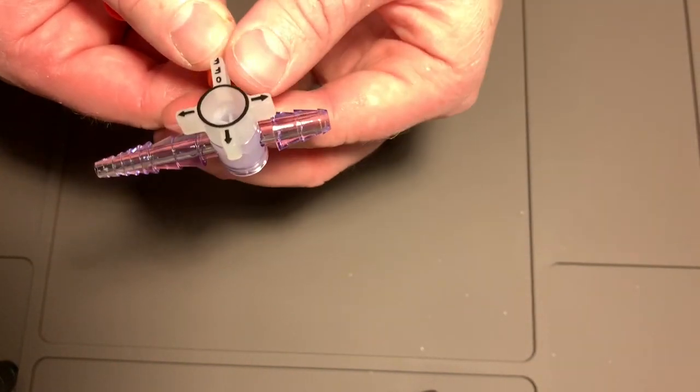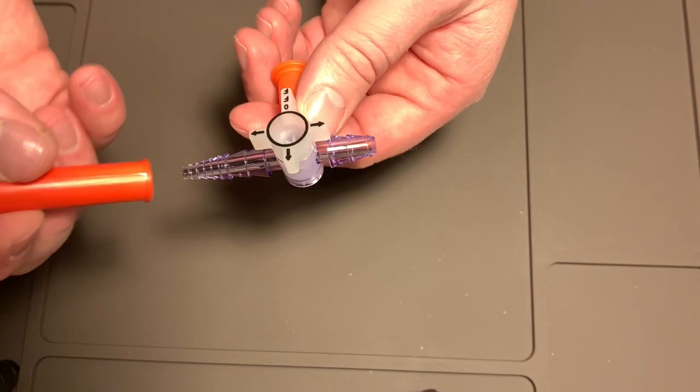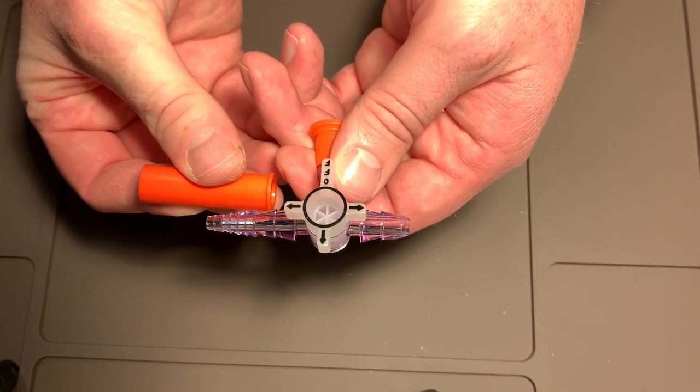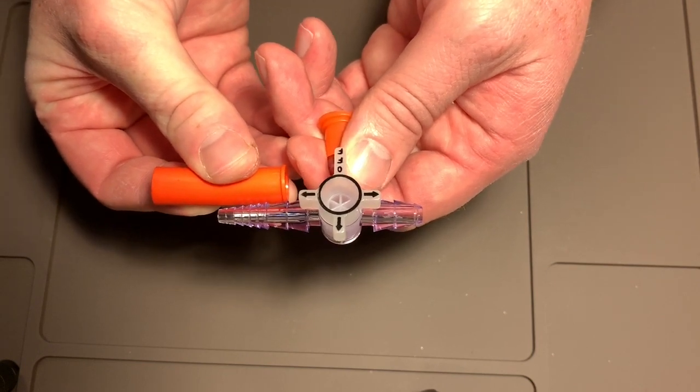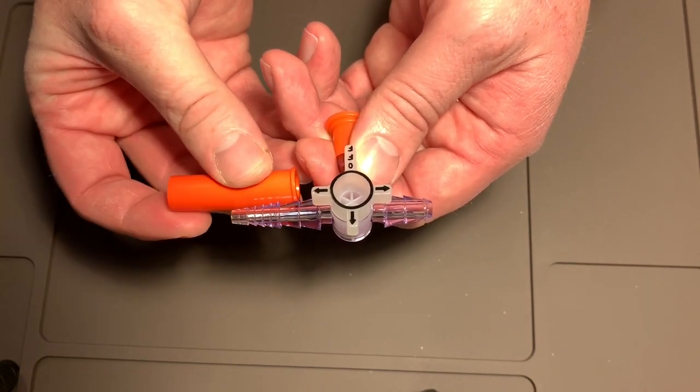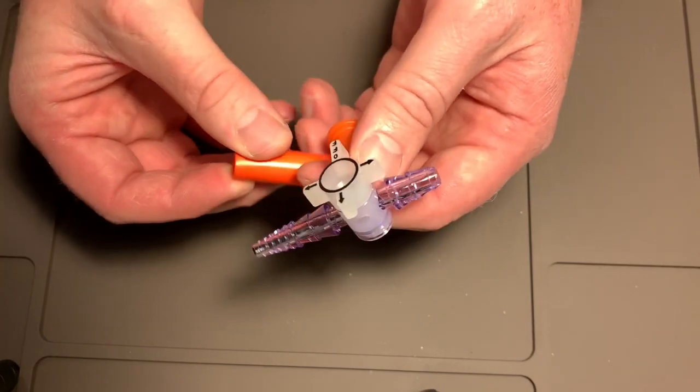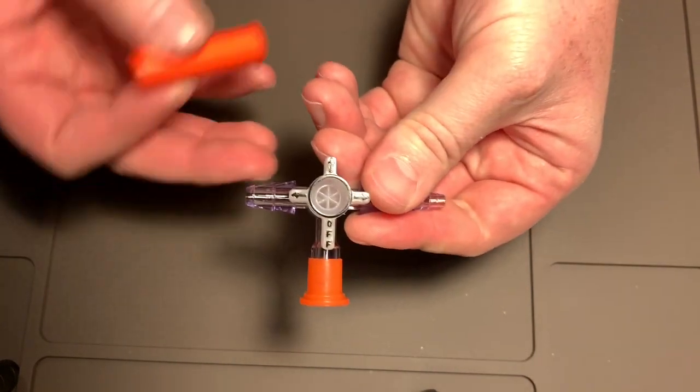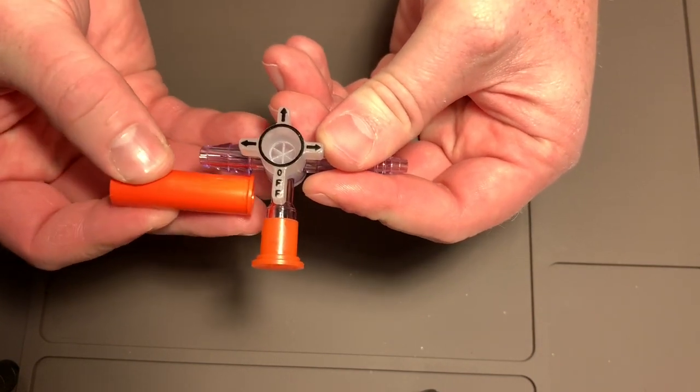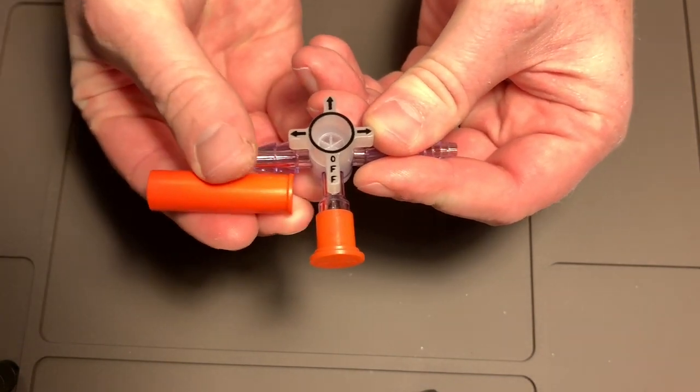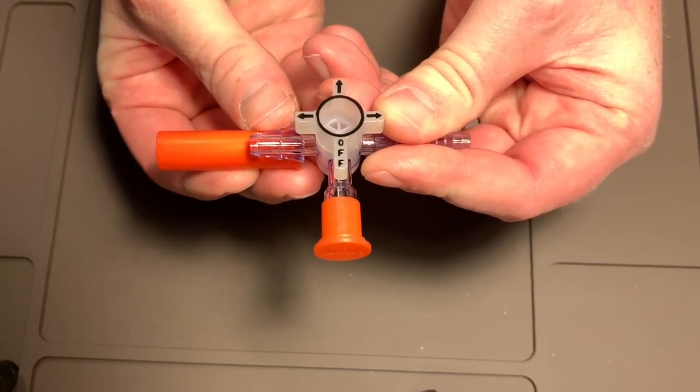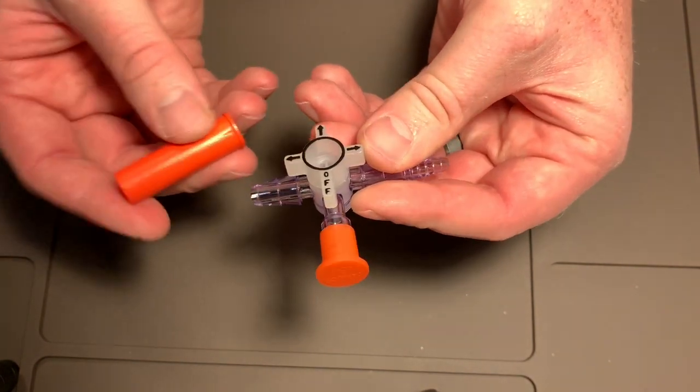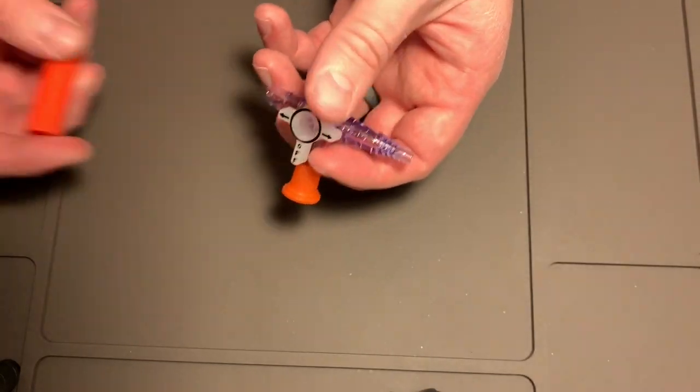But later on, if you end up having to give tube feeding, you can see this little connector piece here. If you were to have it on the long end, there's not a lot of room to put the nozzle in for your tube feed. Whereas if you put it on the short side here, you can see there's definitely enough room to put the nozzle for tube feeding. So that's tip number one.